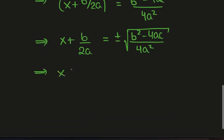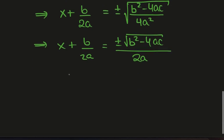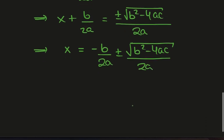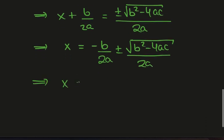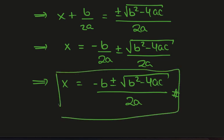We can simplify the right-hand side a little bit. We can separate the numerator and the denominator, and the square root of 4a squared is just 2a. Now if I take the b over 2a term to the other side, I get minus b over 2a plus or minus the square root of b squared minus 4ac over 2a. Combining the fractions since the denominator is already common, we have minus b plus or minus the square root of b squared minus 4ac over 2a — and that's it. In the next video I'll show you how to apply this formula to solve for the solutions of a quadratic equation, but this is how to prove it using the method of completing the square.